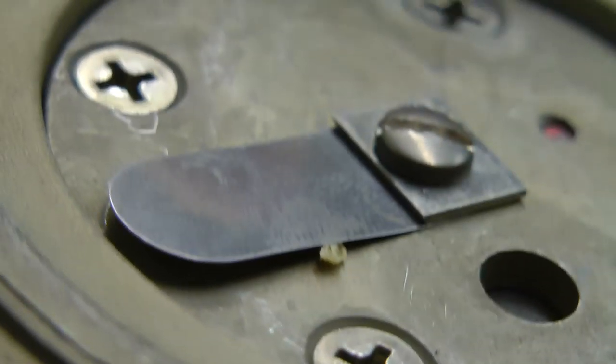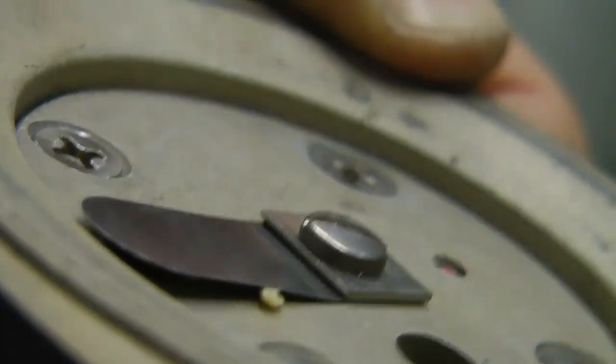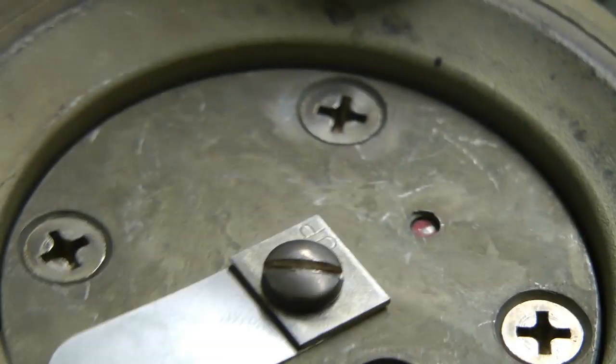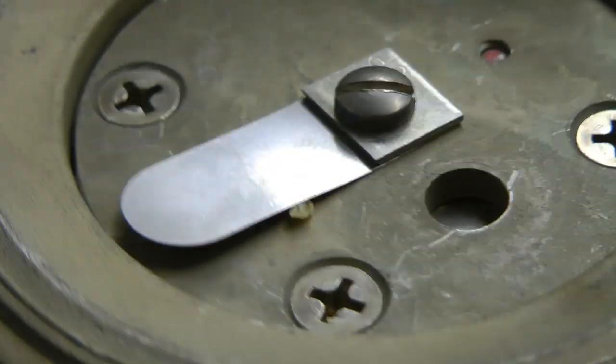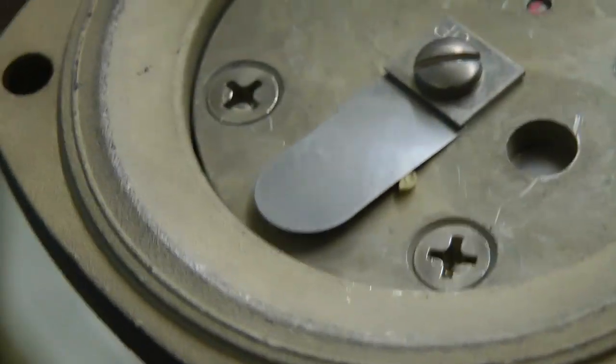Ah yes, you can see a little bit of dirt has gotten under the valve. There's probably some dirt in the vacuum system. I probably should put a filter on this thing. Let's clean that out and see if it runs properly again.